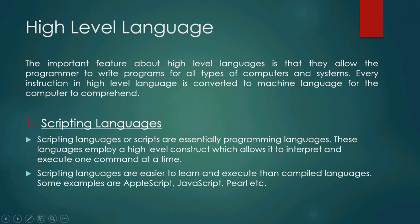As already discussed, computer languages are divided into two types: low-level language and high-level language. Low-level language is for the machine, and high-level language is for the programmer. Programmers write programs for creating operating systems, websites, and applications, so the programmer must understand the language they are writing in.